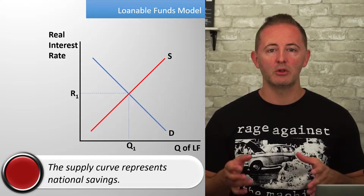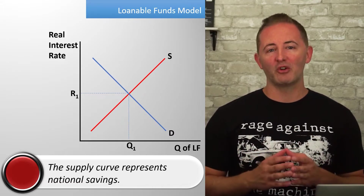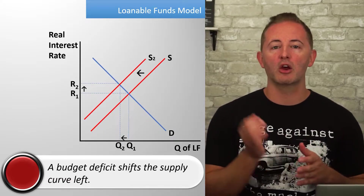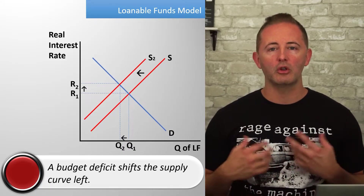Next, we're going to consider crowding out. Policymakers implement expansionary fiscal policy — they cut taxes or raise spending, which most likely creates a bigger budget deficit. When the government has a budget deficit, the Treasury borrows money by selling Treasury bonds. Turning to the loanable funds model: the supply curve represents national savings, including both public and private savings. Public savings is another way to say budget balance. When the federal government runs a budget deficit, public savings are negative, so a budget deficit shifts the supply curve to the left, resulting in a higher real interest rate.